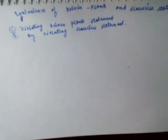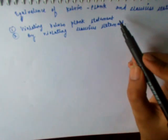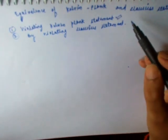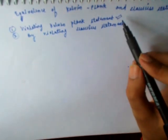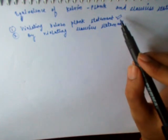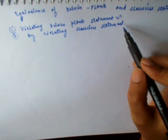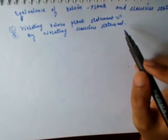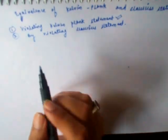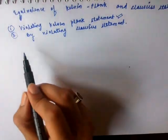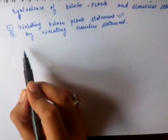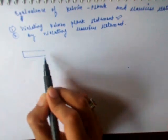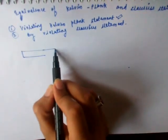First, we are writing the Kelvin-Planck statement and we will prove that violation of the Kelvin-Planck statement causes the violation of the Clausius statement too. For that, let us assume there is a device.